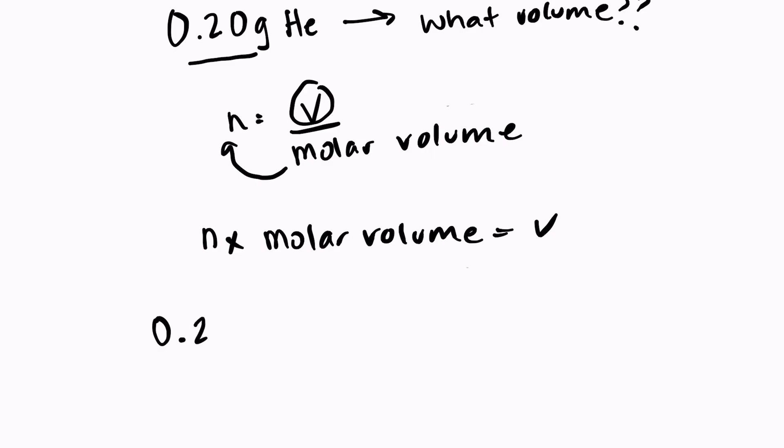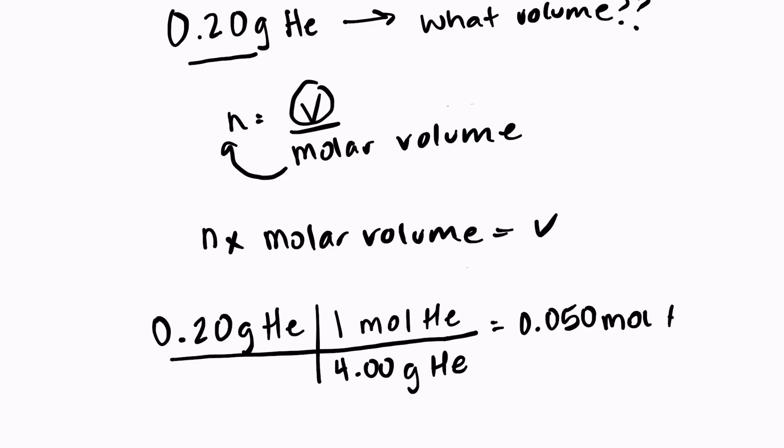So 0.20 grams of helium multiply by our conversion factor, one mole of helium over 4.00 grams of helium, because one mole is equal to the molar mass, which is 4.00 grams. So 0.2 divided by 4.00 gives us 0.05 moles of helium.